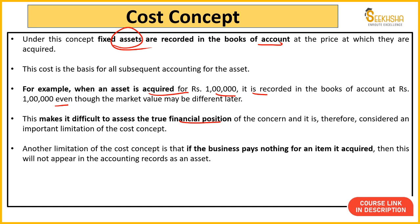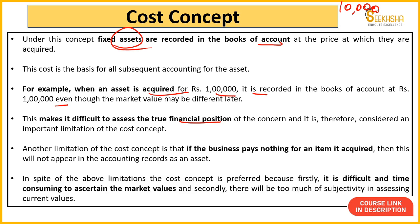Accounting books mein double entry system hota hai — dual effect hoga. Agar aap 10,000 rupay ka asset record kar rahe ho, toh 10,000 equivalent ka cash bhi reduce karna padega ya business ke finances bhi kam karne padenge. Par agar aap kuch pay nahi kar rahe ho, toh definitely woh account ki book mein bhi nahi aayega. Cost Concept ki limitation yeh hai ki future financial position determine karna difficult ho jata hai. Exact market value future ki determine nahi kar sakte, aur karne bhi jao toh bahut zyada biasness ya subjectivity aa jaayegi.